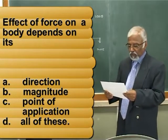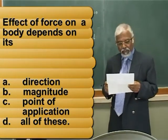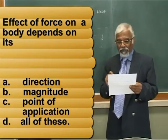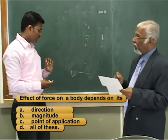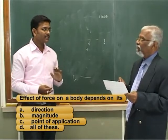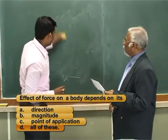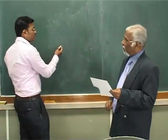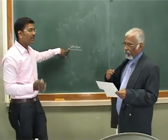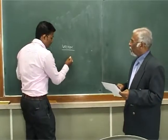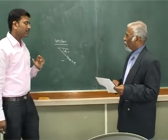Should we go on to the next question? Okay. The effect of a force on a body depends on its: option A — direction, option B — magnitude, option C — point of application, option D — all of these. I think the correct answer will be all of these. The reason is that for defining any force, we need its magnitude, its direction, and its point of application. Force is a vector quantity — vector quantities are defined by both magnitude and direction — so all of these is the correct answer.